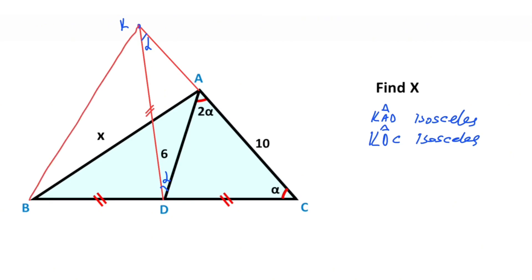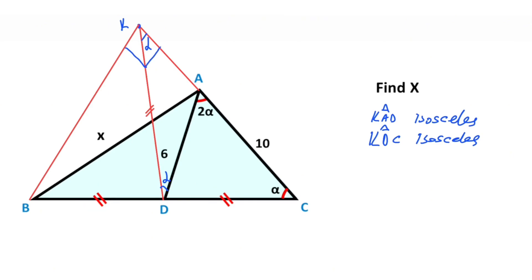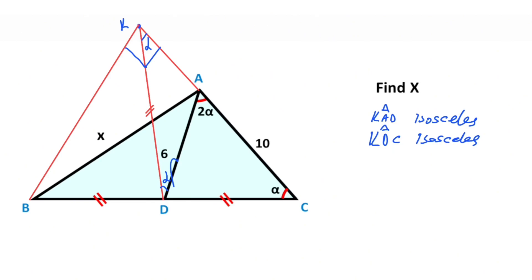Next step: if you connect these two points, notice that these two parts are equal angles, which means angle BKC must equal 90 degrees. Then if you focus on this triangle — it is an isosceles triangle — so if you add 6, this length must also equal 6 units.